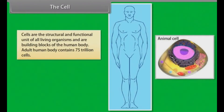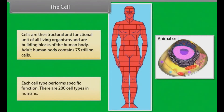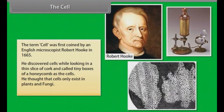The cell. Cells are the structural and functional unit of all living organisms and are building blocks of the human body. The adult human body contains 75 trillion cells. Each cell type performs a specific function. There are 200 cell types in humans. The term cell was first coined by English microscopist Robert Hooke in 1665, who discovered cells while looking at a thin slice of cork and called the tiny boxes of a honeycomb "cells." He thought that cells only exist in plants and fungi.